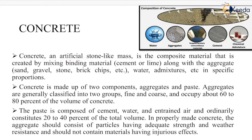Concrete is an artificial stone-like mass and is a composite material created by mixing a binding material — that is cement or lime — along with aggregates such as sand, gravel, stone, brick chips, etc., water, admixtures, etc., in specific proportions. In this diagram, water, aggregate, supplementary cementitious material (sand), cement, and chemical admixture are all shown as the composition of concrete.